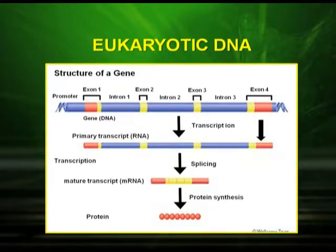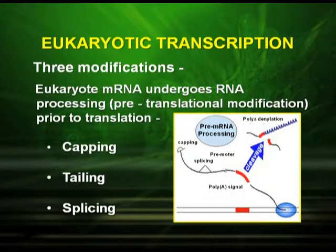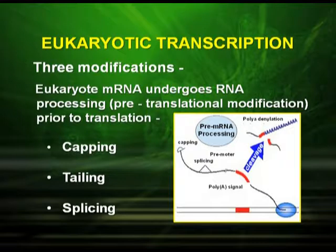The RNA formed in eukaryotes is a heterogeneous RNA formed inside the nucleus. This heterogeneous RNA is non-functional. To make it functional, the RNA moves out from the nucleus into the cytoplasm where further modifications are required. Eukaryotic mRNA undergoes RNA processing, called pre-translational modifications, prior to the translation process. These three modifications are capping, tailing, and splicing.